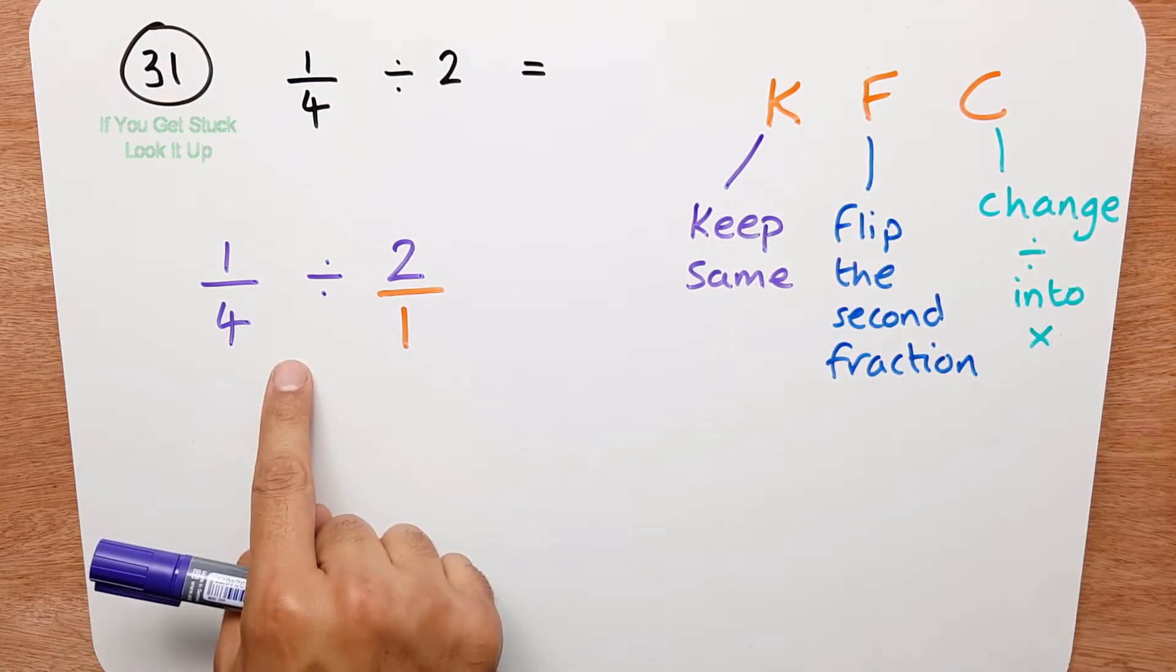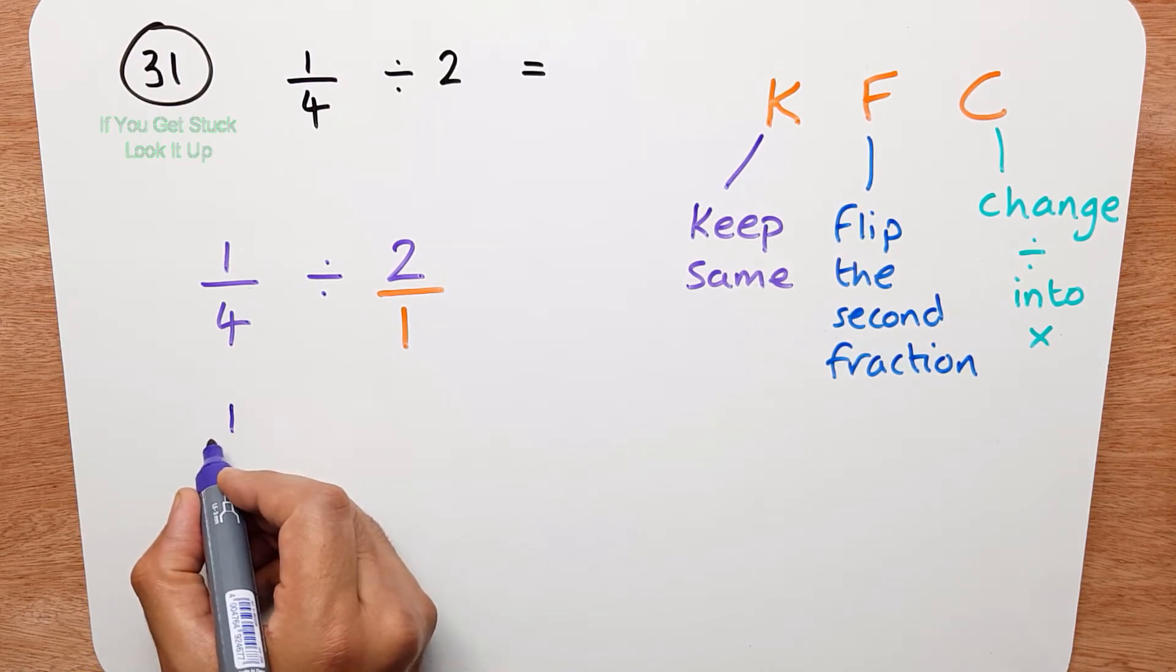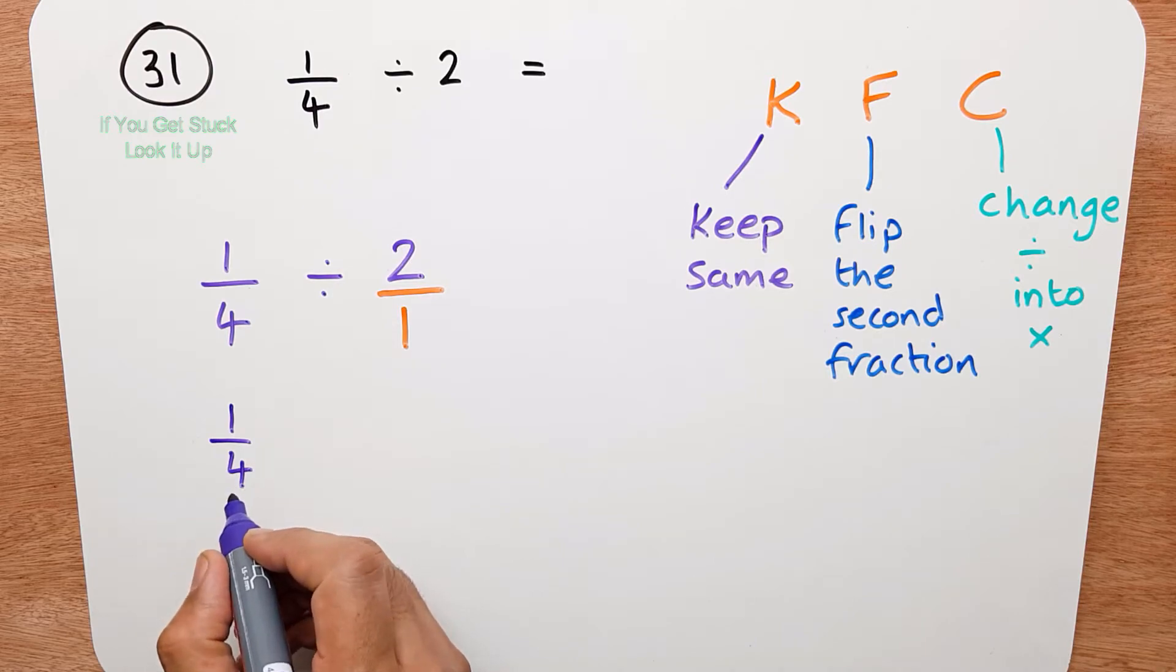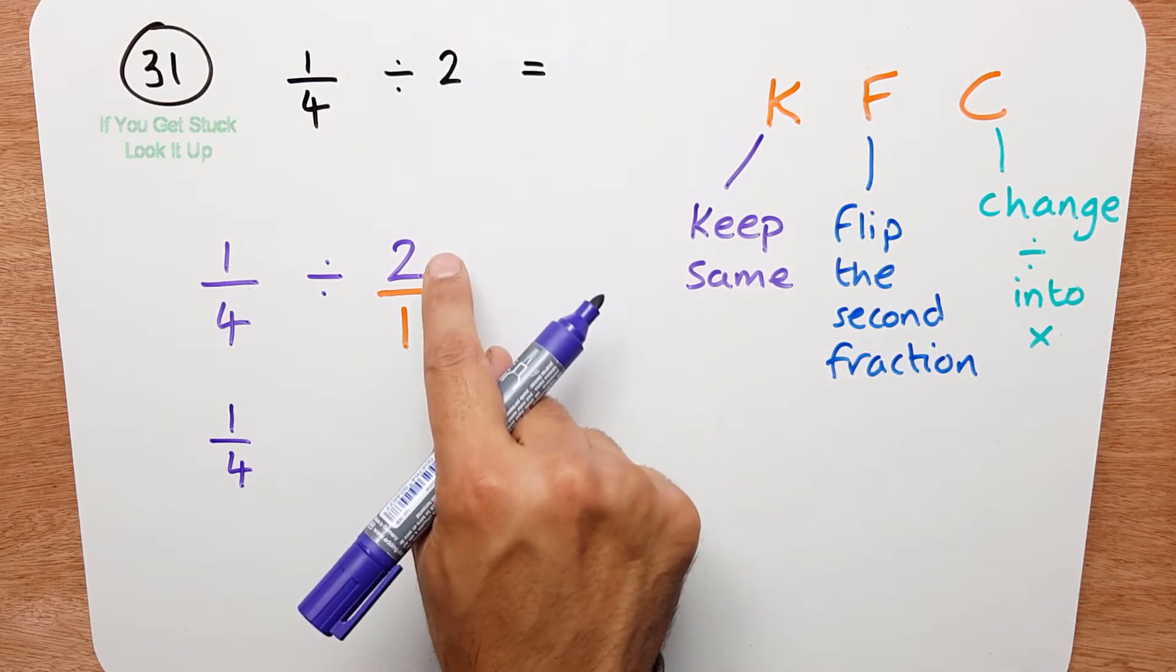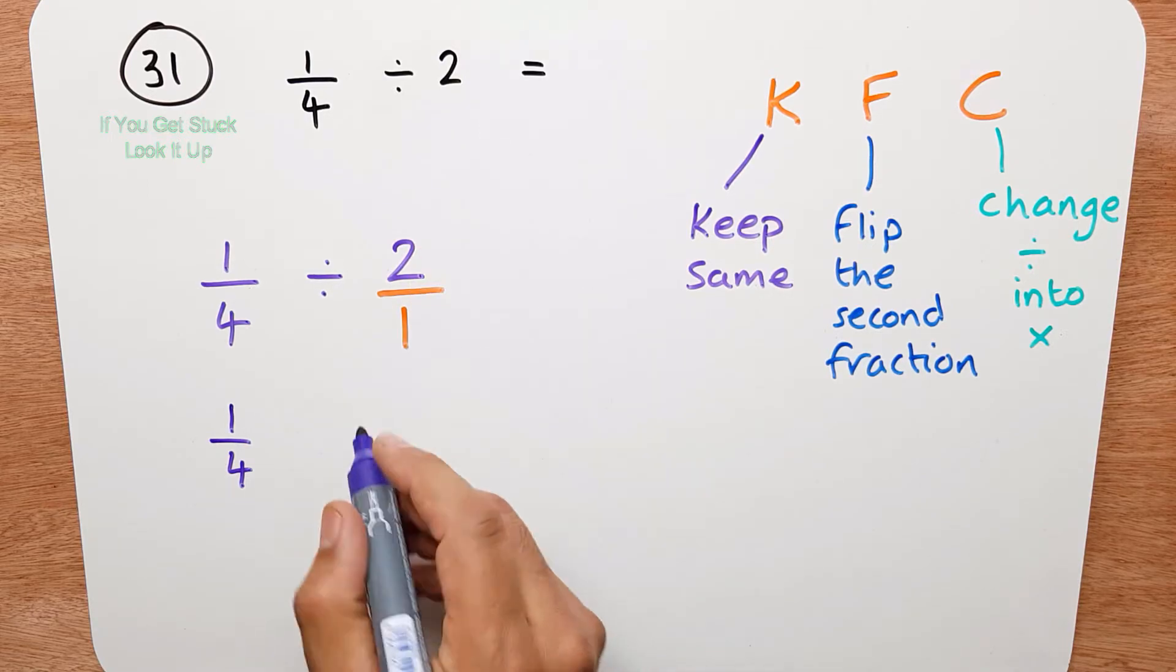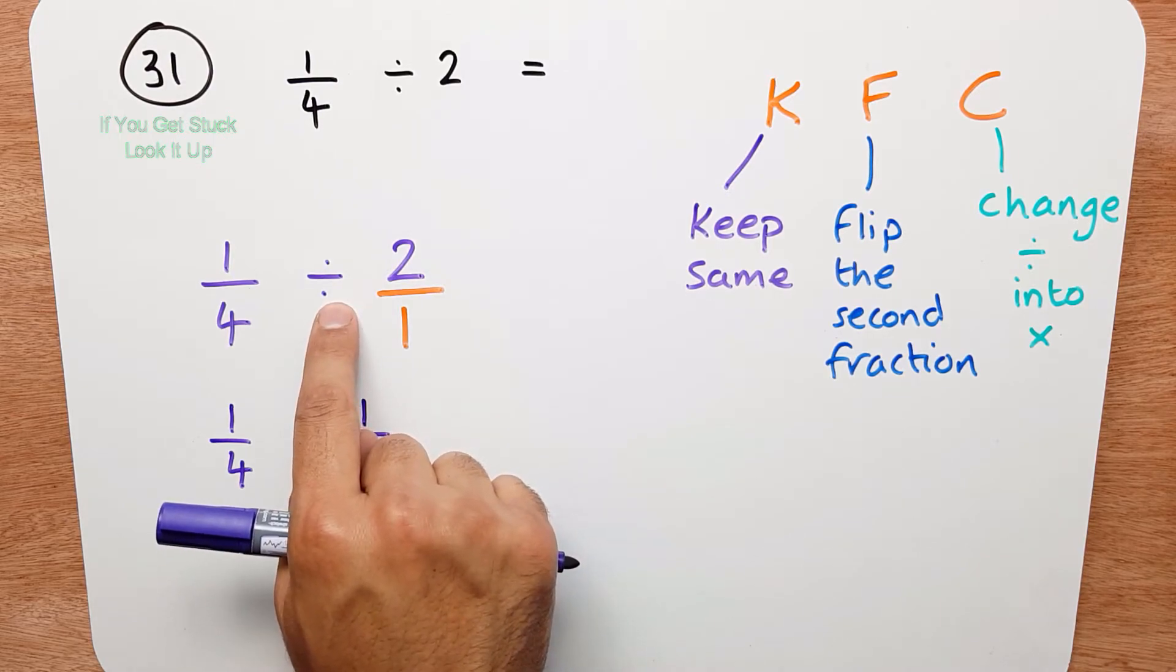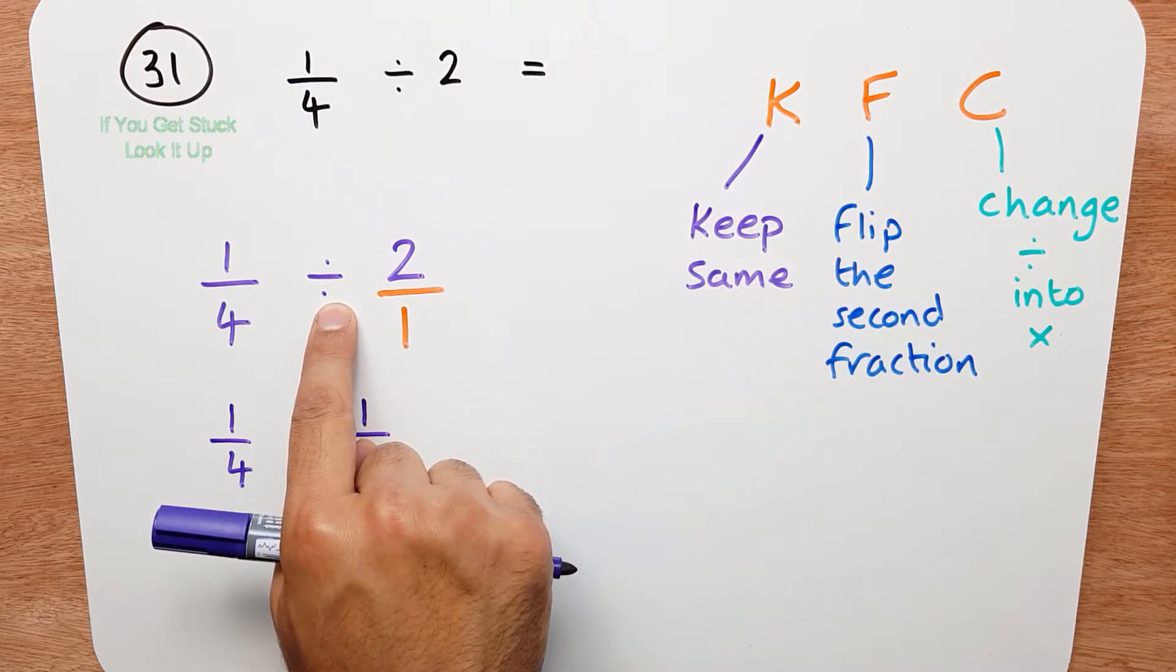So let's go ahead and do that here. Keep the first fraction the same. So we're going to write 1 quarter. Flip the second fraction. So the 2 goes to the bottom and the 1 goes to the top. And finally we need to change the divide into a times.